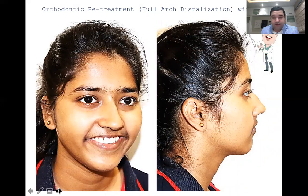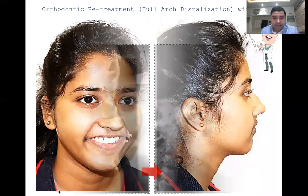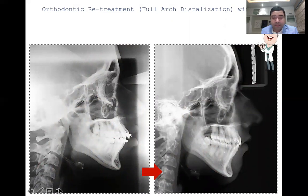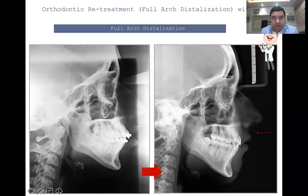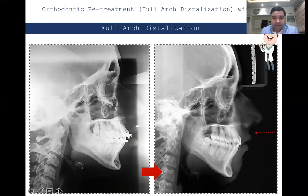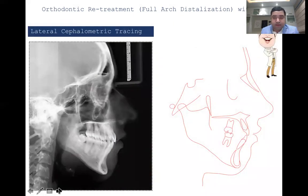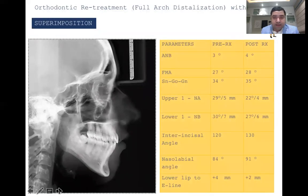Lip competence is established, the gummy smile is completely gone, the profile looks great at the end of treatment, and a lot of retraction has been achieved with third molar extraction and IZC bone screws. There is a significant change in the inter-incisal angle and proclination of upper and lower incisors — that is the effect of full arch distalization after upper third molar extraction. The lateral cephalogram and tracing confirm that we have significantly changed the inclination of the upper and lower incisors, given a good bite, corrected the gummy smile, improved the profile, and changed the nasolabial angle significantly.